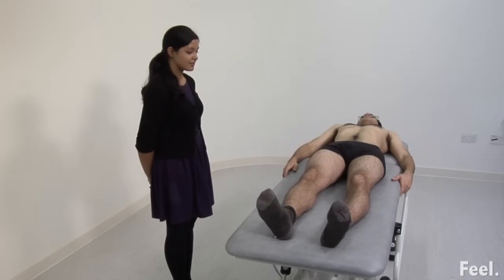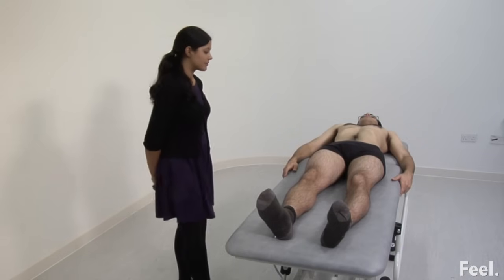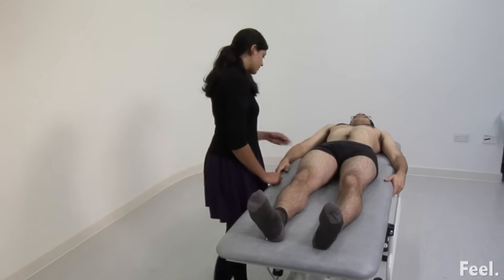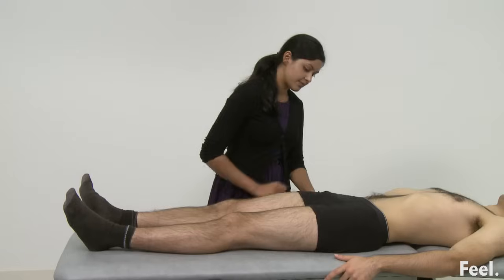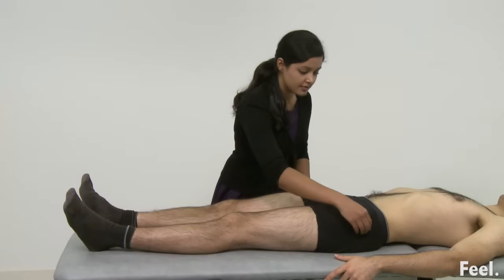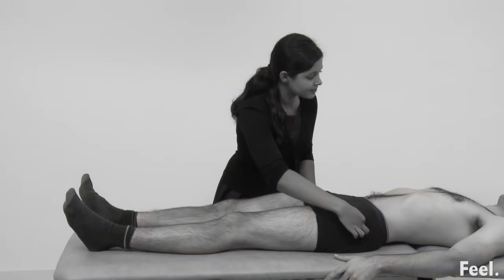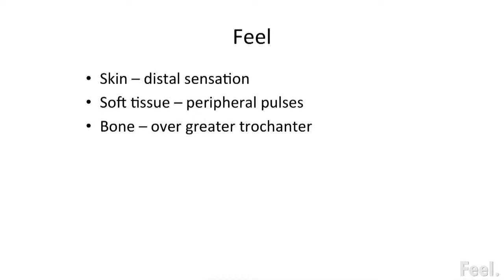Most of the bony structures of the hip joint are deep and difficult to feel. It is, however, important to feel over the greater trochanter on the lateral side of the hip. Tenderness at this point indicates greater trochanteric bursitis. This slide summarises what should be felt during examination of the hip.